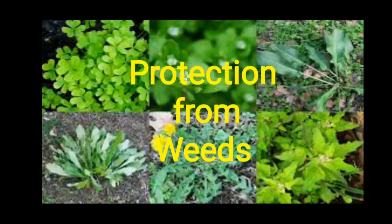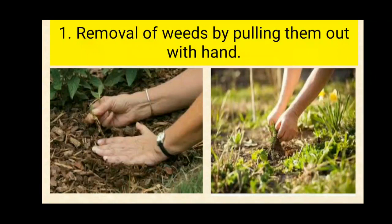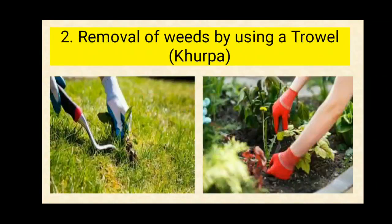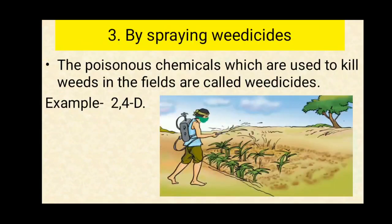Let's revise once again: weeds are the unwanted plants that grow along with the cultivated crop. The process of removing weeds from a crop field is called weeding. Weeding can be done either manually, or by using a trowel (kurpa) and seed drill, or by spraying weedicides. Thank you, see you in the next video.